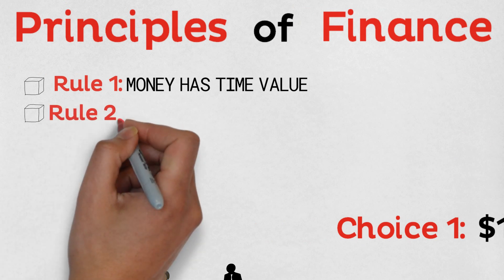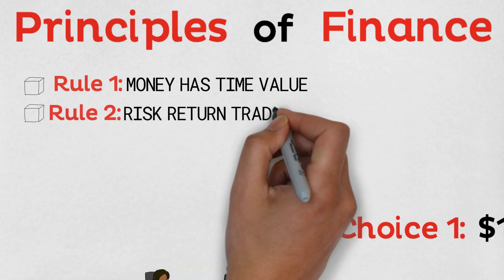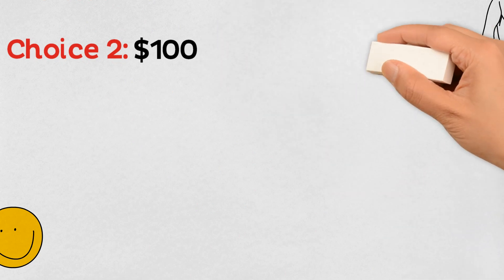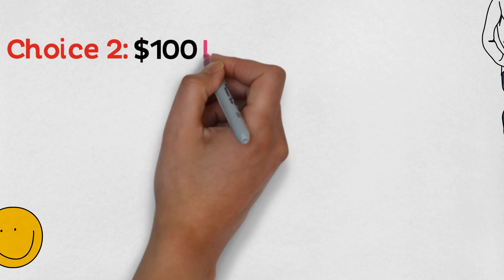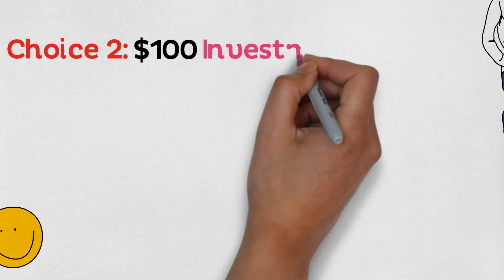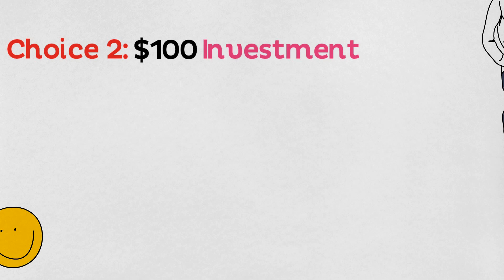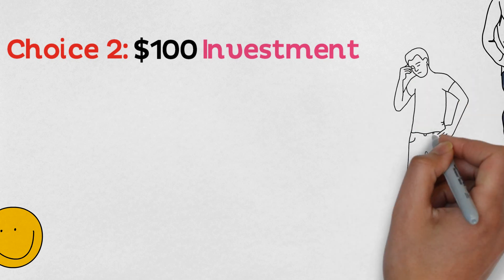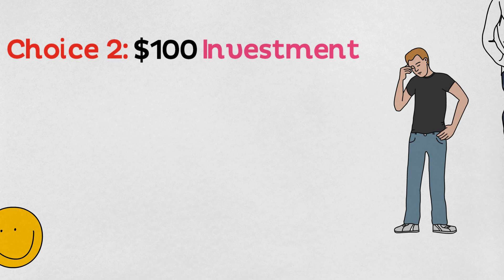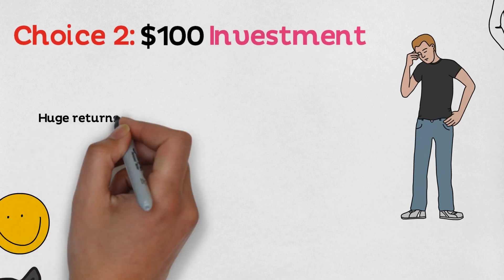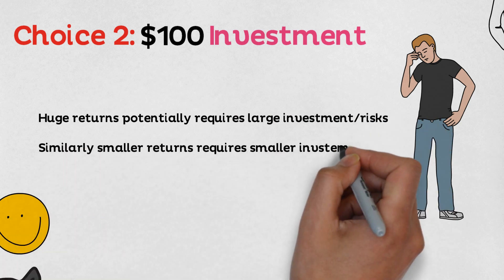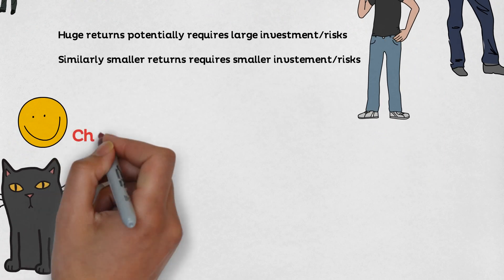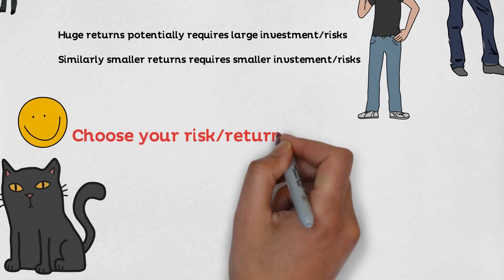Rule number two: there's a risk-return trade-off. Using the same example, I give you the same option but add that rather than me giving you the money, if you give me the money today, I'll give you an enormous return at the end of one year. It really depends on the risk associated and the trade-off. Say you're willing to forego $100 and believe in my business, because the rate of interest is so convincing that you're willing to lose $100 on hopes of making 10 times the amount. That's the risk-return trade-off.